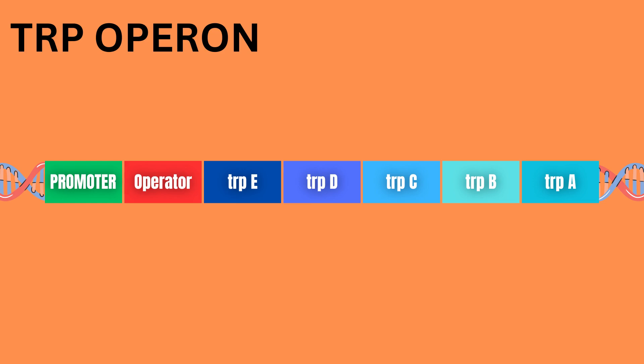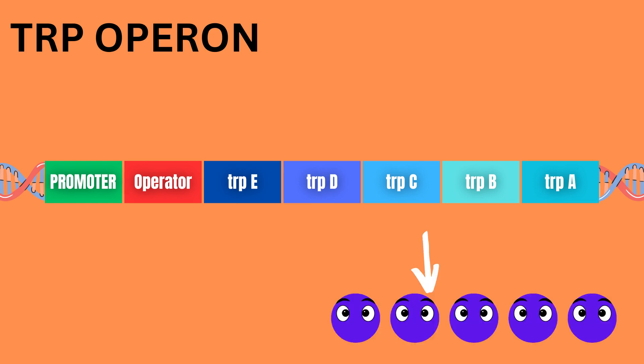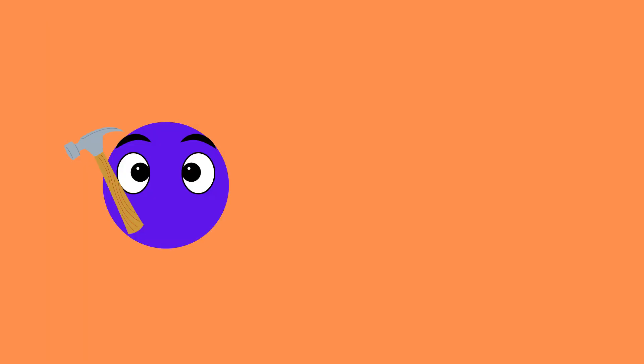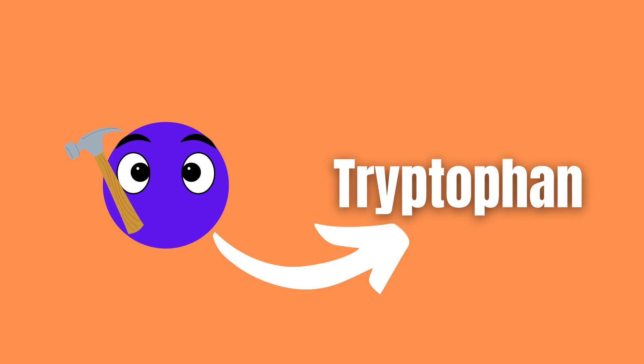The tryptophan operon, or TRP operon, contains five genes that encode for five enzymes that help the bacteria make tryptophan. Tryptophan is an amino acid used to make proteins and is therefore needed at all times.